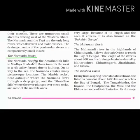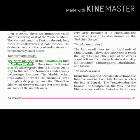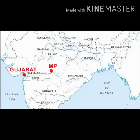Now let's talk about the Narmada Basin. It rises in the Amarkandak Hills in Madhya Pradesh, and this river moves towards the western side. You will get to see some picturesque locations like the marble rocks near Jabalpur and the Dhuadhar Falls, where this river plunges over steep rocks, creating a beautiful waterfall. All the tributaries of Narmada are very short. Remember that the Narmada Basin covers parts of Madhya Pradesh and Gujarat.